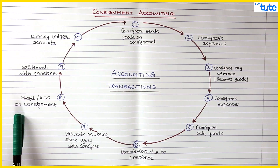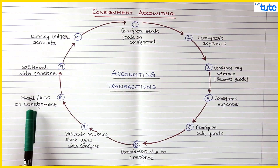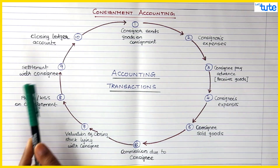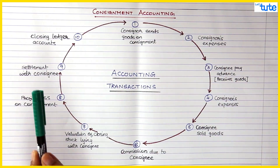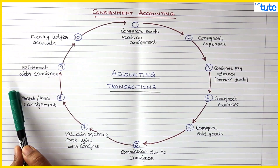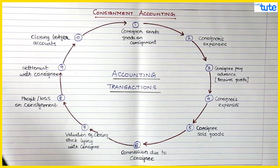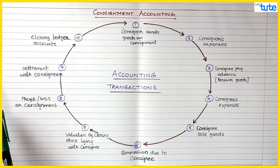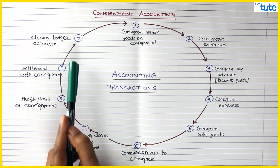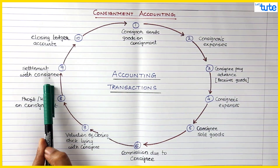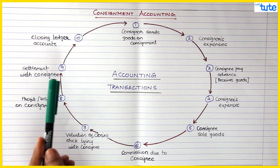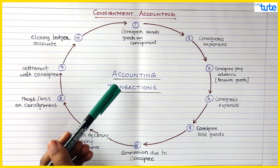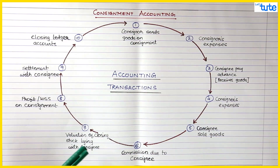After profit or loss is found, we finally settle the balance with the consignee. There are two possibilities: either the settlement is done — cash or cheque is received from the consignee, or a bill of exchange is accepted by the consignee — or the settlement is not yet made, in which case the consignee's balance would be carried forward, as we may have an ongoing transaction and might settle in future.